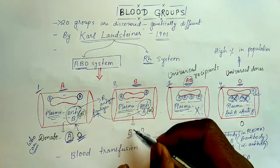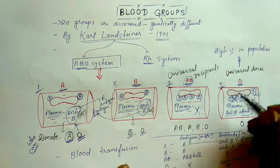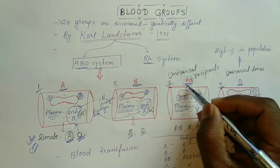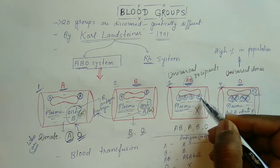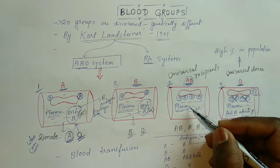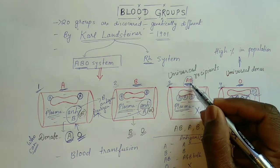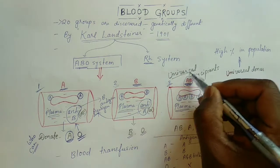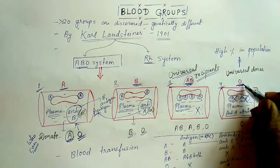Similarly, in blood group B, a B person can donate to B because they have the same antigen. O can also donate because O has no antigen. In AB blood group, both antigens are present and there are no antibodies in plasma, so no reaction occurs with anyone's RBC. Therefore, anyone can donate to AB — this is why AB is called the universal recipient.